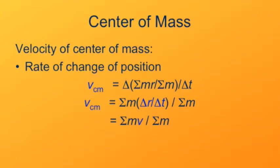So the velocity of the center of mass turns out to be equal to the sum of the mass times velocity of each individual particle divided by the total mass of the system. In other words, the velocity of the center of mass is equal to the total momentum of the system divided by the total mass of the system.